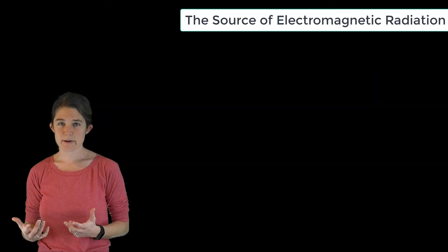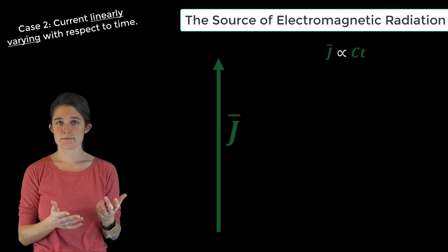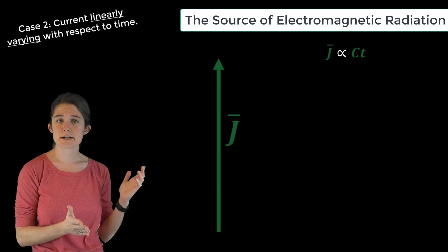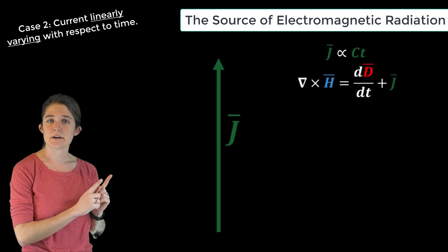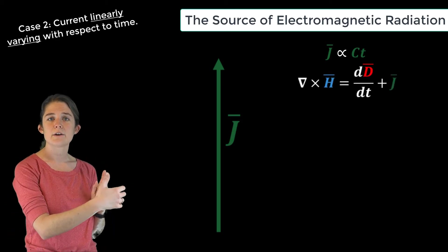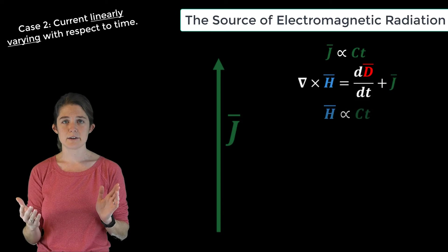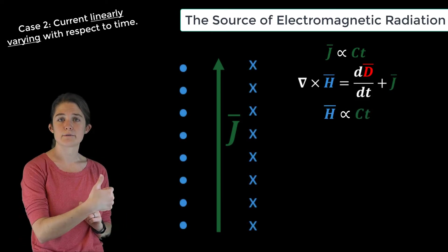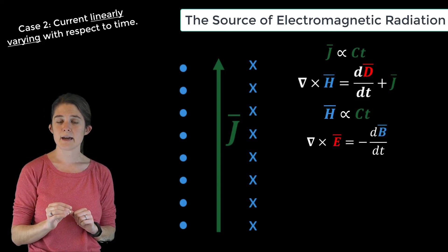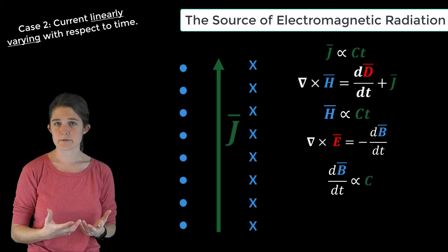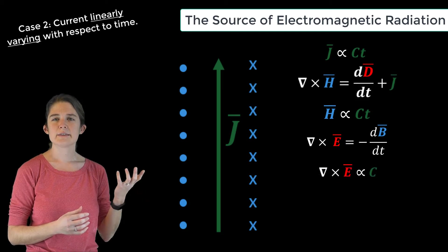What if we have a current that is varying with time? Consider a linear variation — a current that is either linearly increasing or decreasing with time. Again by Ampere's law, the presence of a current leads to a directly related curling magnetic field, so a linearly varying current creates a linearly varying magnetic field which loops around the current. By Faraday's law, this linearly varying magnetic field has a nonzero time derivative, so from the source magnetic field we will get an electric field.